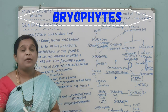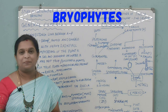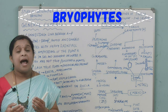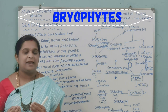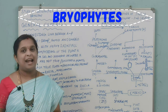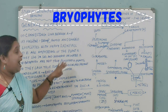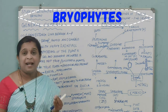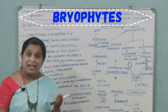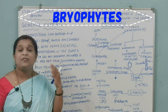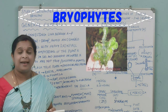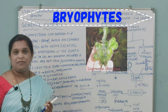In algae, you are not going to see a well-developed vascular system. In pteridophytes, there is an evolution in the plants and you observe well-developed vascular tissue. So bryophytes serve as a connecting link between algae and pteridophytes. The habitat where bryophyte plants survive is damp, shady areas with heavy rainfall. Species like Riccia, Marchantia, and Funaria — the mosses, liverworts, and hornworts — belong to this group.